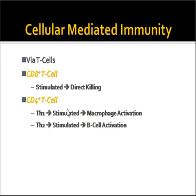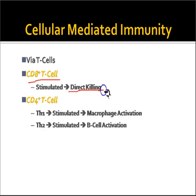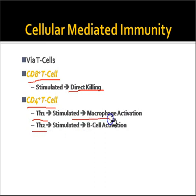A little part of cell mediated immunity also involves the role of B cells. There are two types of T cells primarily involved. The first is CD8+ T cells, also known as cytotoxic T cells, which cause the direct killing of the invading pathogen. Next are CD4+ T cells, which are helper T cells that fall under two classes — TH1 and TH2 — depending on the pathway they stimulate.